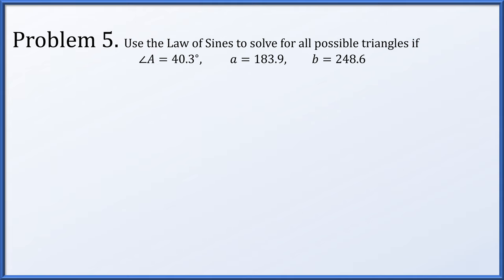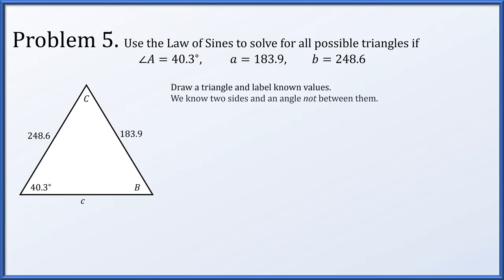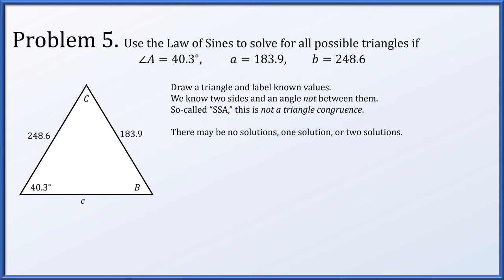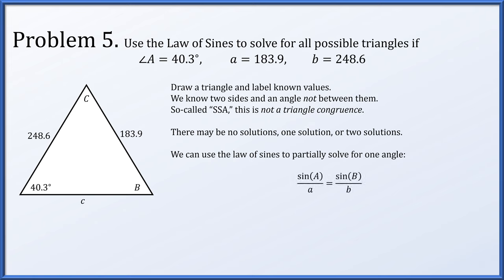Problem five: let's use the law of sines to solve for all possible triangles if angle A is 40.3 degrees, side length a is 183.9, and side length b is 248.6. Let's draw a triangle and label the known values. Again, we've got two sides and an angle that's not between them — not a triangle congruence. We might have no solutions, one solution, or possibly two. We use the law of sines to partially solve for angle B using the information we have.